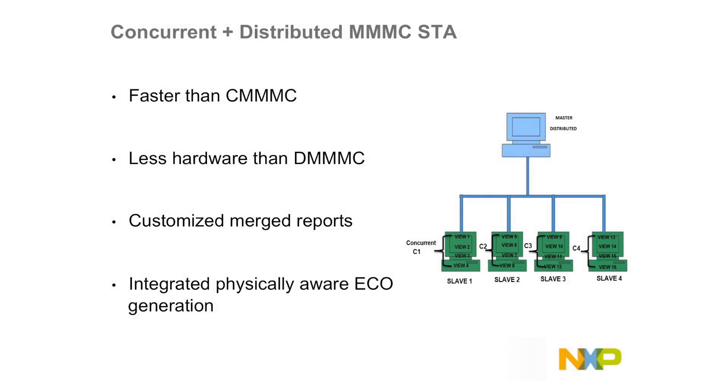Based on the user requirement as well as the infrastructure available, a designer can choose either a Concurrent or a Distributed flow. Also, there is a provision in the Tempus flow where we can combine Concurrent plus DMMC STI flow, where we can achieve benefits in both run times as well as performance.